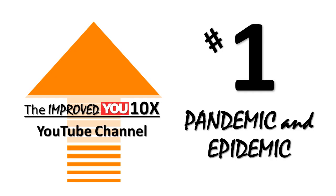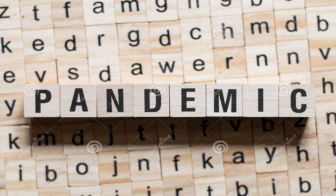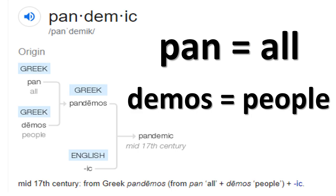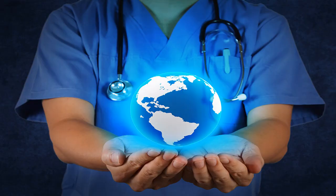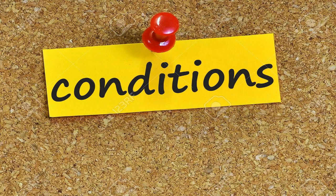Number 1: Pandemic and Epidemic. The word pandemic comes from 'pan,' which means all, and 'demos,' which means people. In the study of health sciences, a pandemic refers to a global disease outbreak. Three conditions must be met for a pandemic to start.